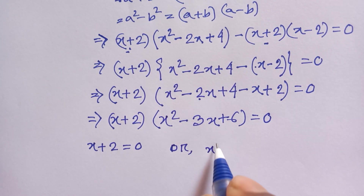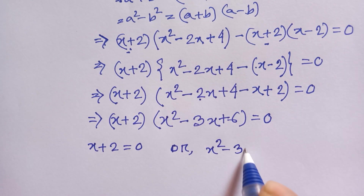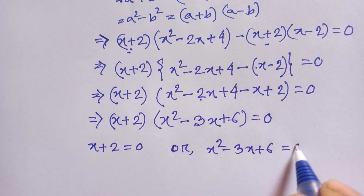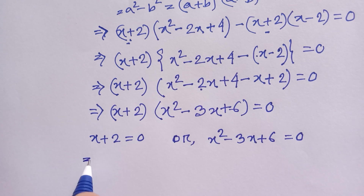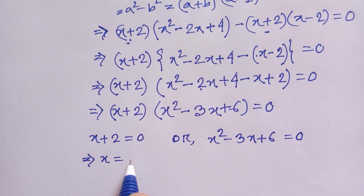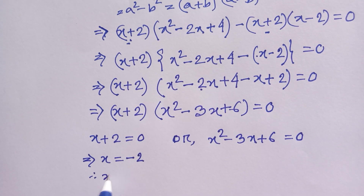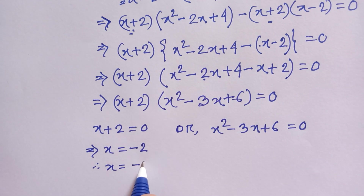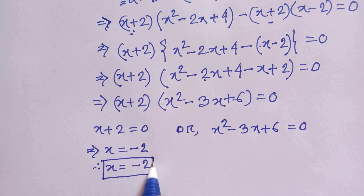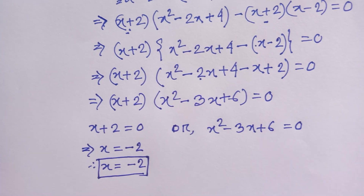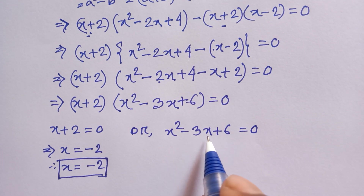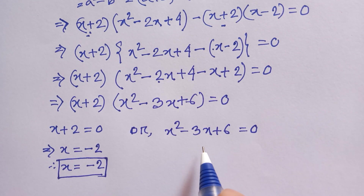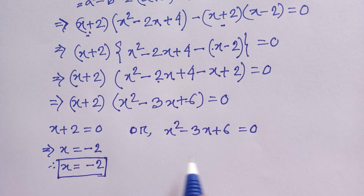From the first factor, x + 2 = 0, therefore x is equal to minus 2. This is one value of this equation. For the second factor, x squared minus 3x plus 6 equals 0, which is a quadratic equation.